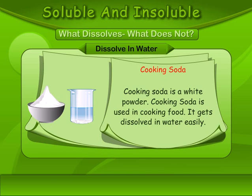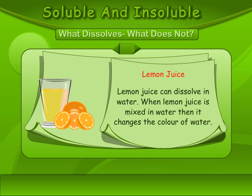Cooking Soda: Cooking soda is a white powder used in cooking food. It gets dissolved in water easily. Lemon Juice: Lemon juice can also dissolve in water. When lemon juice is mixed in water, it changes the color of the water.